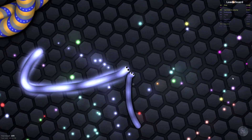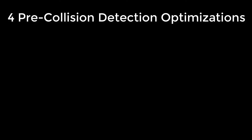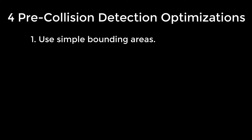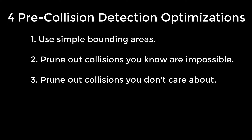So our objective is to prune out as many of these collisions as possible. There are four genres of pre-collision detection optimizations that we're going to talk about in this video. The first is using simple bounding areas. The second is to prune out collisions that you know are impossible. The third is to prune out collisions that you don't care about. And the fourth is to parallelize where possible. I think the vast majority of pre-collision optimizations fall under one of these four categories, though there might be more and I can't talk about everything in this one video.